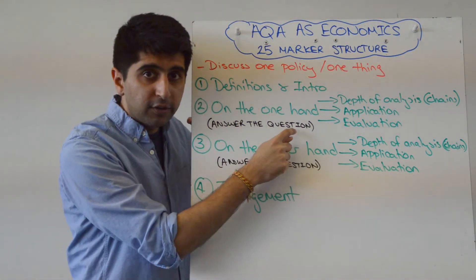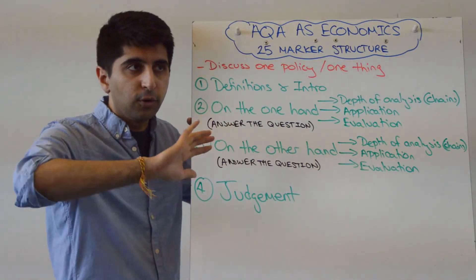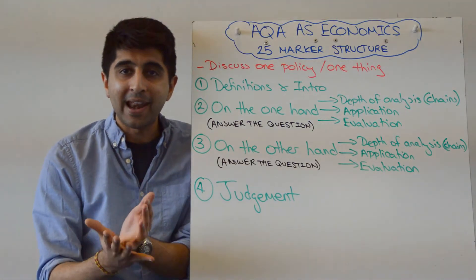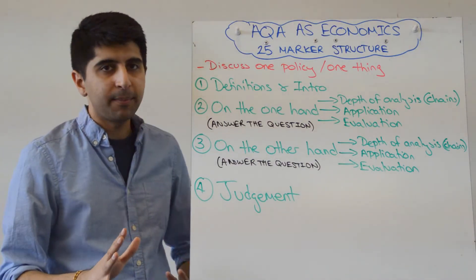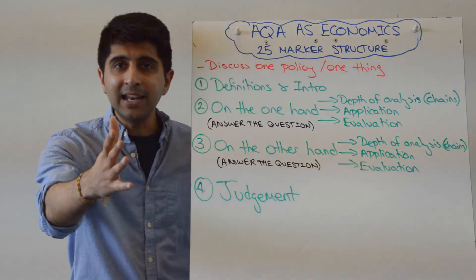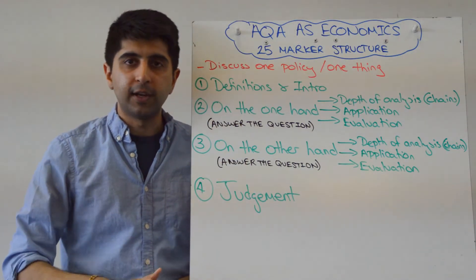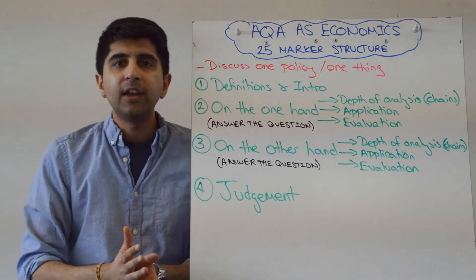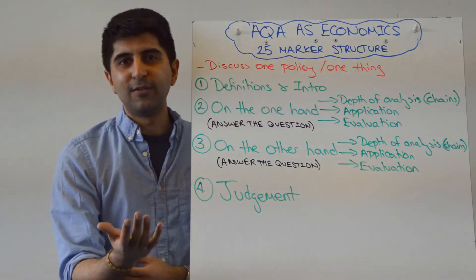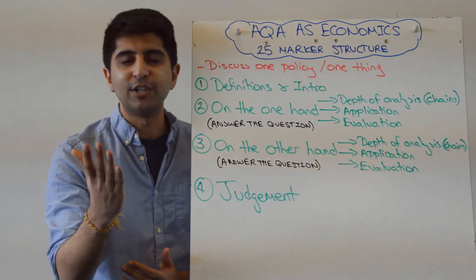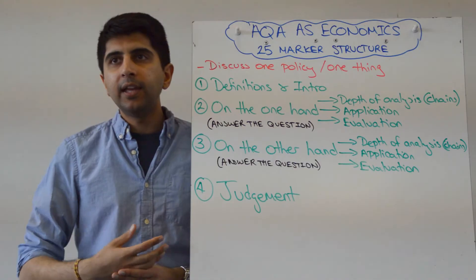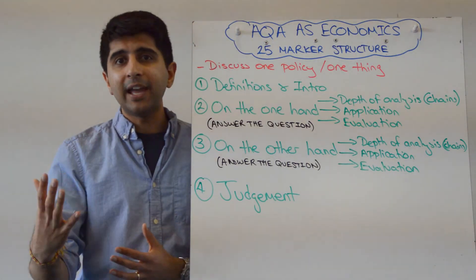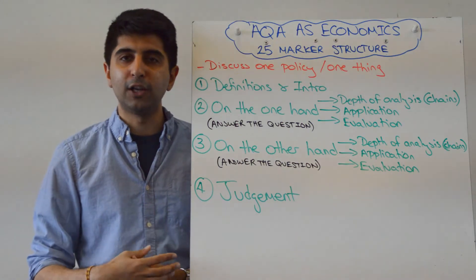Make sure you're always answering the question — stay to what the question is asking; don't diverge. Then, on the other hand, you do exactly the same process. You've still got to answer the question. So, for example, indirect tax to solve overconsumption of sugary drinks: on the one hand, here's why — make all your points with fantastic evaluation throughout. On the other hand, here are some reasons why indirect tax is not the most effective way. Or: on the other hand, here's why an increase in consumption may not always increase economic growth. Or: here's why greater exports and imports may not always improve UK macroeconomic performance.